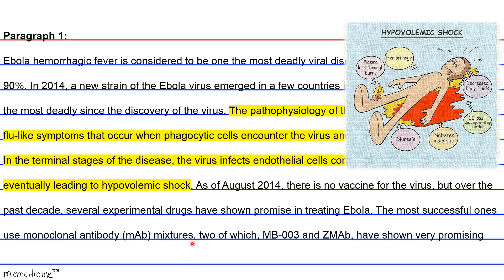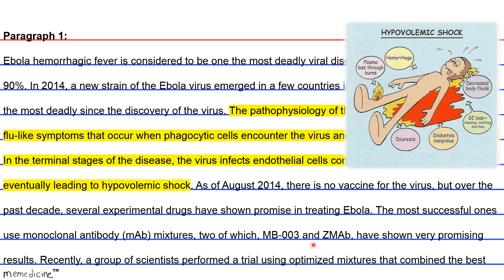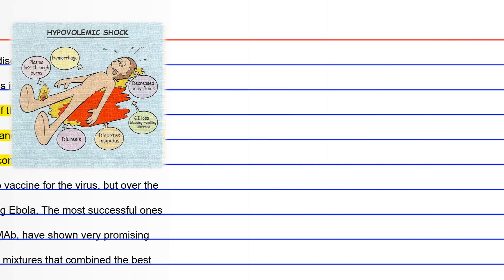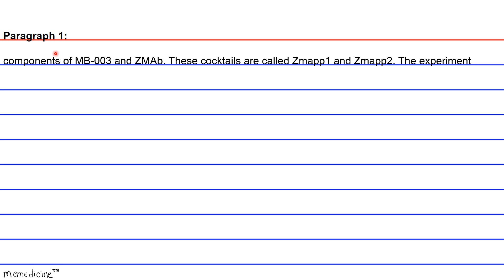Two monoclonal antibody treatments, MB003 and ZMAB, have shown very promising results. Recently, a group of scientists performed a trial using optimized mixtures that combine the best components of MB003 and ZMAB. These cocktails are called ZMAB1 and ZMAB2.